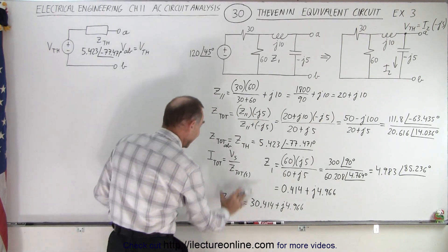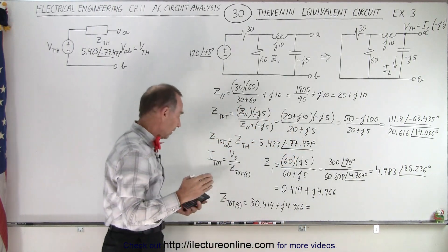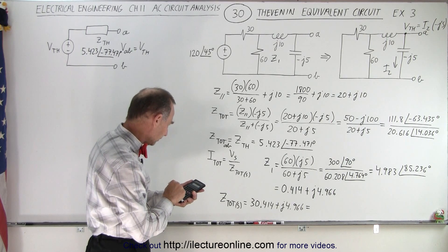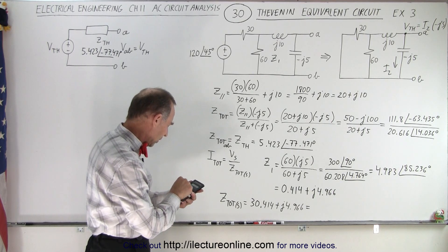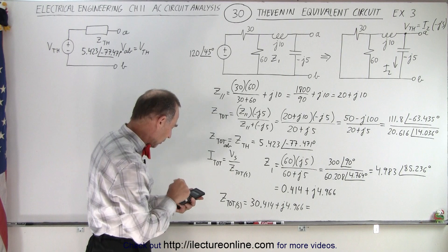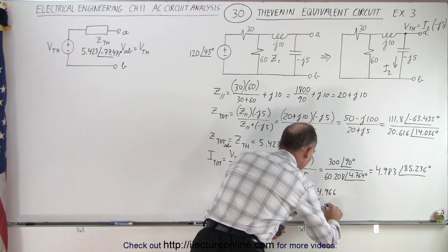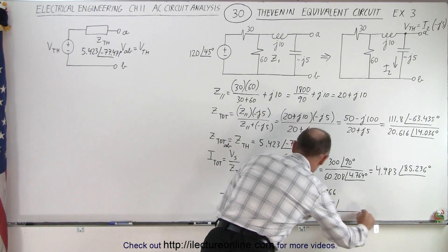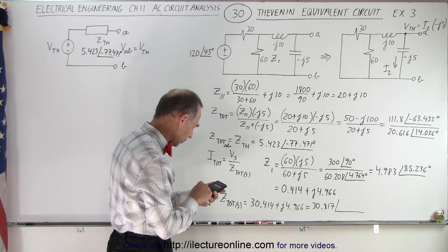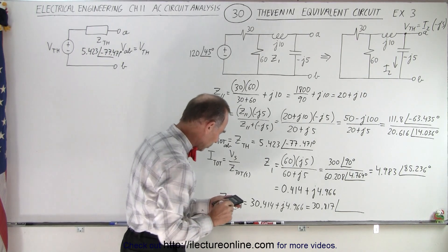Since we're dividing into the source voltage, we reconvert back to magnitude and phase angle format: square root of 30.414 squared plus 4.966 squared equals 30.817, with a phase angle of inverse tangent of 4.966 over 30.414 = 9.273 degrees.